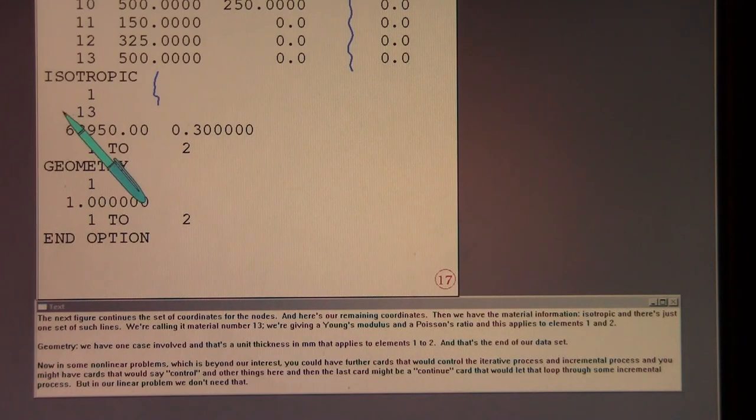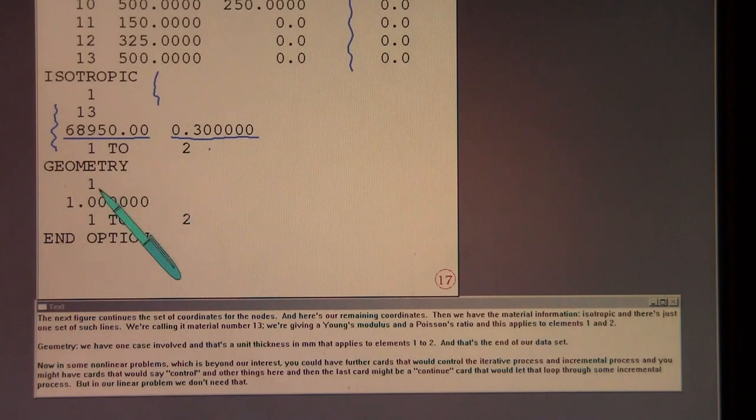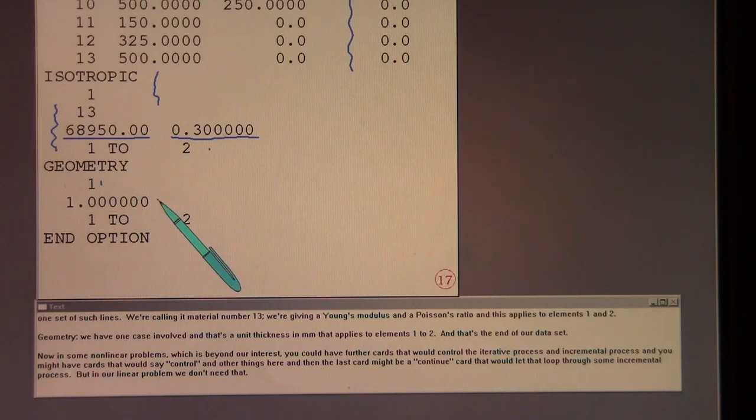The next figure continues the set of coordinates for the nodes. And here's our remaining coordinates. Then we have the material information isotropic. And there's just one set of such lines. We're calling it material number 13. We're giving a Young's modulus and a Poisson's ratio. And this applies to elements 1 and 2. Geometry. We have one case involved. And that's a unit thickness in millimeters that applies to elements 1 to 2. And that's the end of our data set.